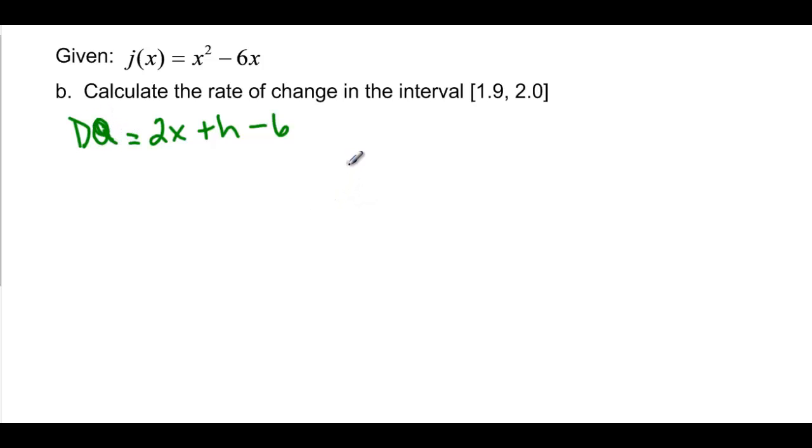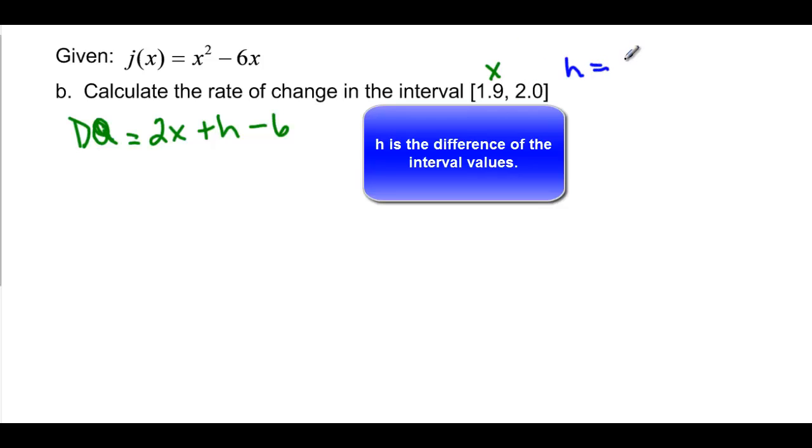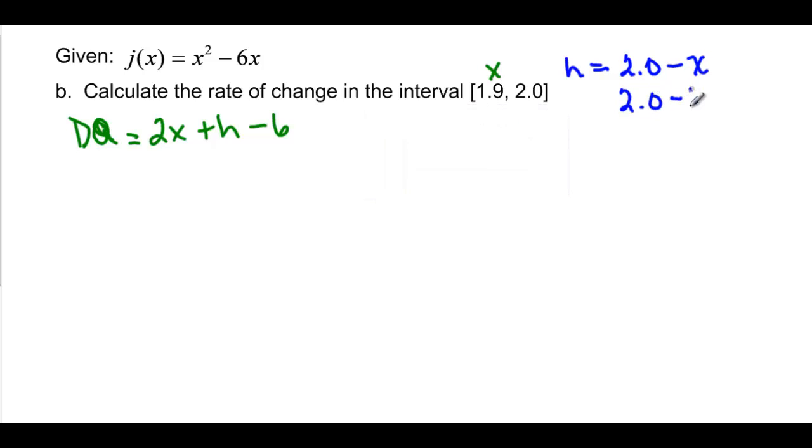When we do the difference quotient here, we have to figure out what x is, and we have to figure out what h is. x is going to be the first value, 1.9. Now I have to figure out what h is. This is not h. h is equal to the 2.0 minus the x value, or 2.0 minus 1.9. So h is going to be equal to 0.1.